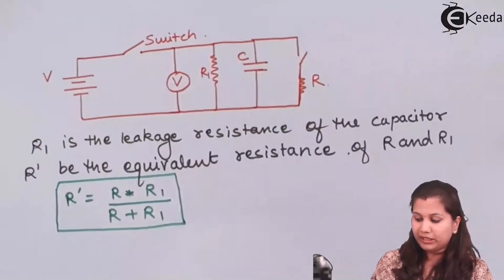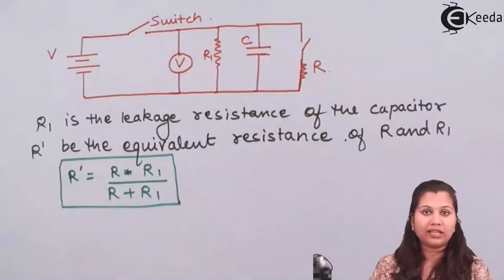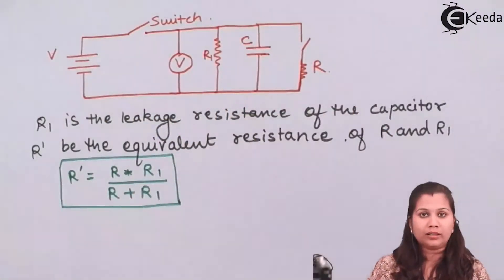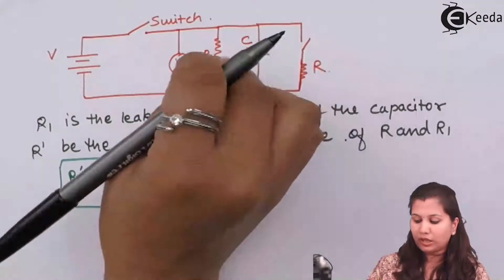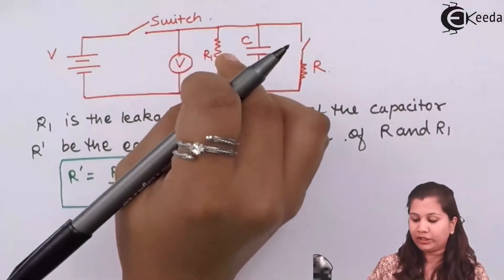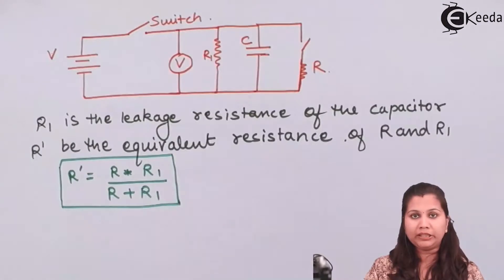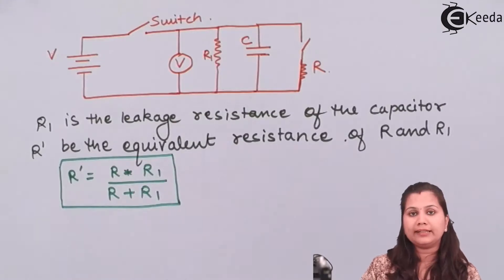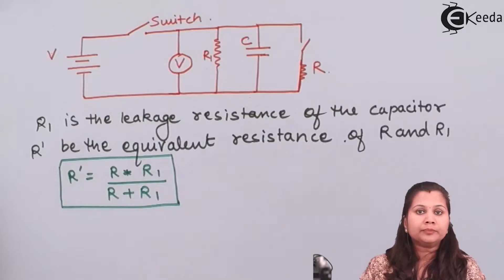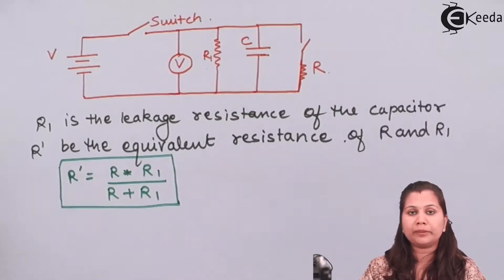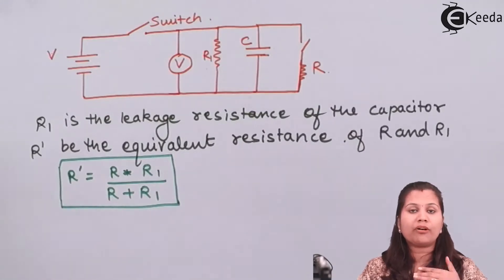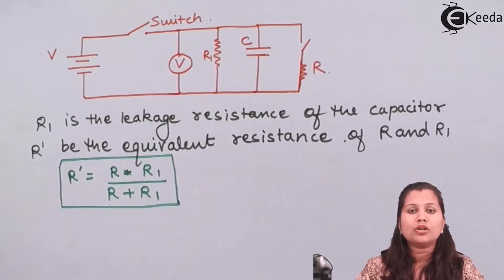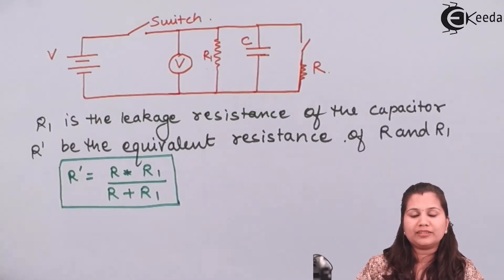In this loss of charge method, when the leakage resistance of the capacitor is very high compared to the unknown resistance we want to measure, we must consider this leakage resistance and cannot neglect it. The first equation is used when the leakage resistance is not so high and can be neglected. This is the loss of charge method used for the measurement of high resistances of the order of 100 kilo ohms or greater than 0.1 mega ohm.